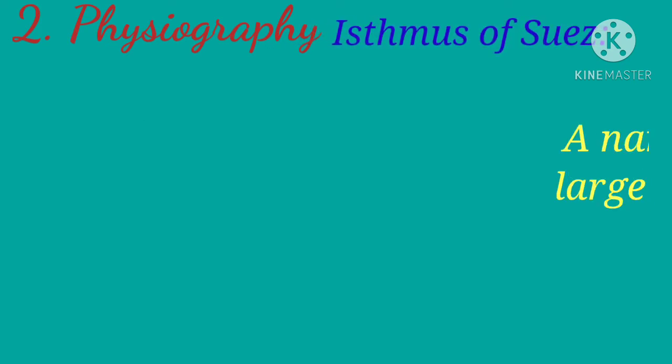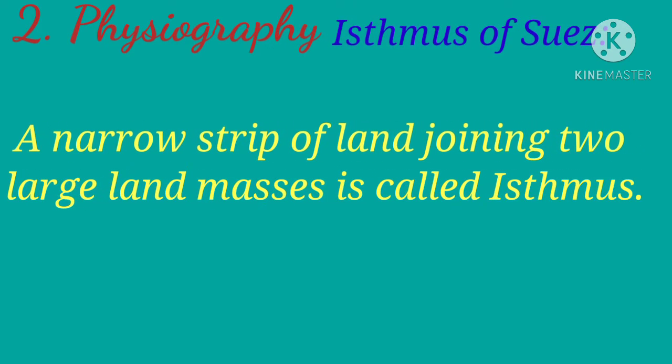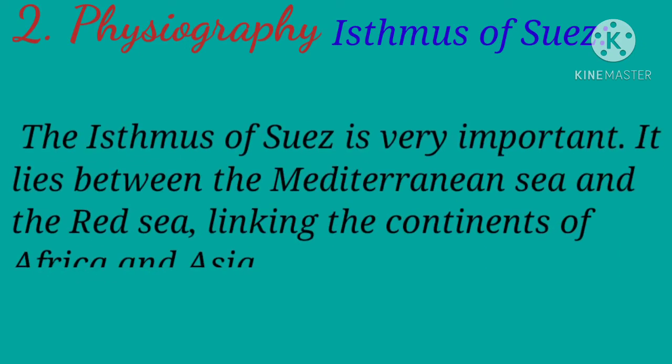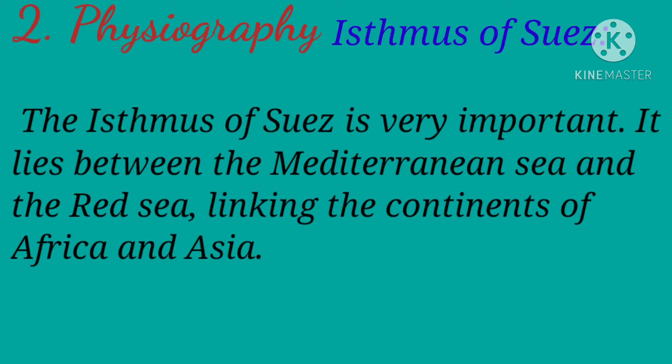A narrow strip of land joining two large land masses is called an isthmus. The Isthmus of Suez is very important; it lies between the Mediterranean Sea and the Red Sea, linking the continents of Africa and Asia.